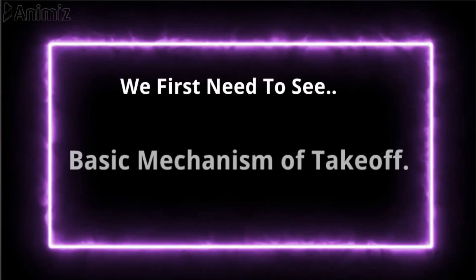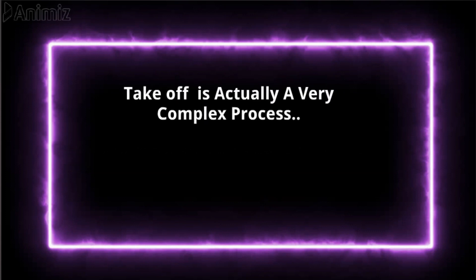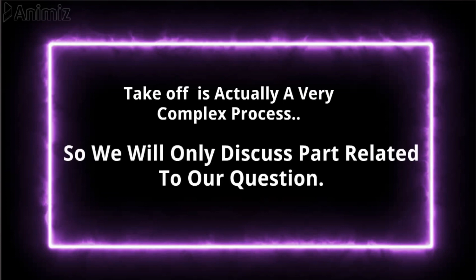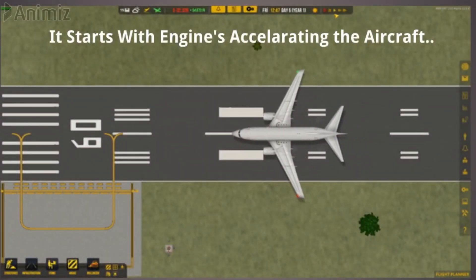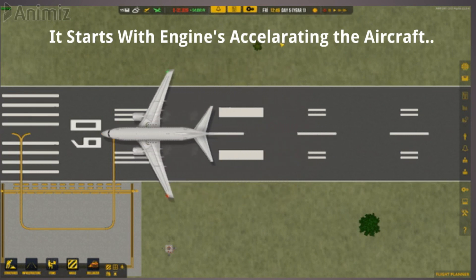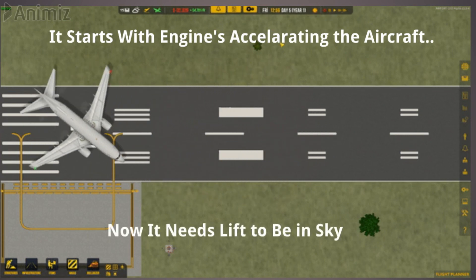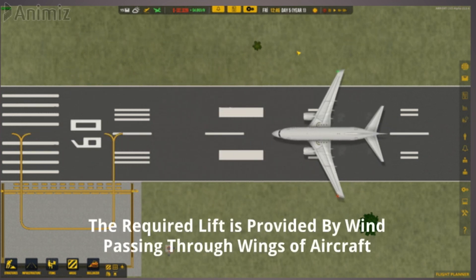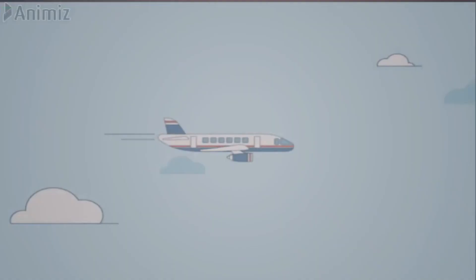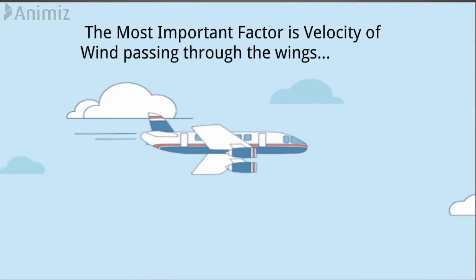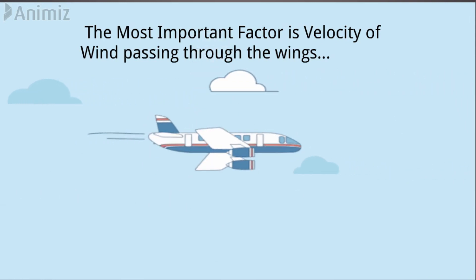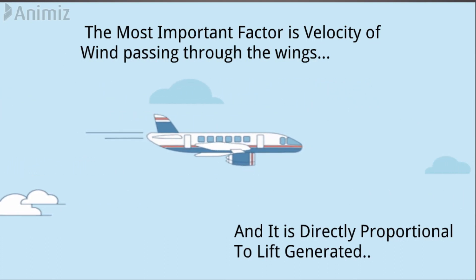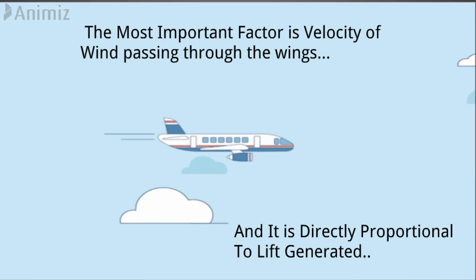If you also think this way, please watch the video to clear all your doubts. To answer this question, we first need to understand the mechanism of take off. Take off might look simple but is actually a very complex process, so we will only see the process related to our question. It starts with the force of the engine that helps the plane to accelerate. The aircraft needs lift in order to be in the sky, and this lift is provided by the wind passing through the wings. The most important factor that affects takeoff is the velocity of wind — the velocity of wind passing through the wings is directly proportional to the lift generated.